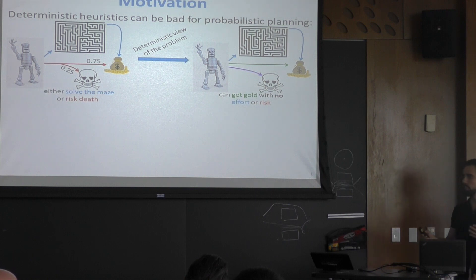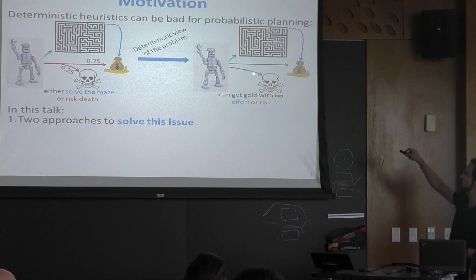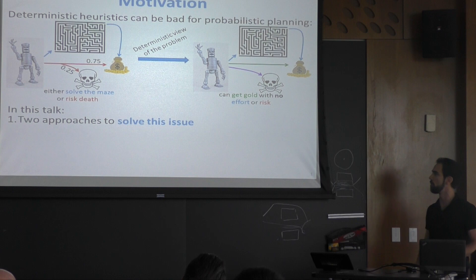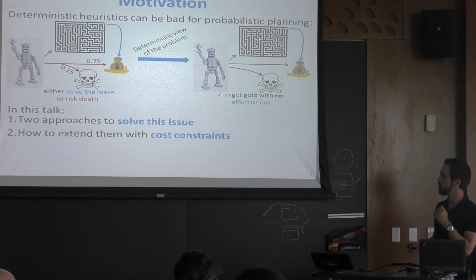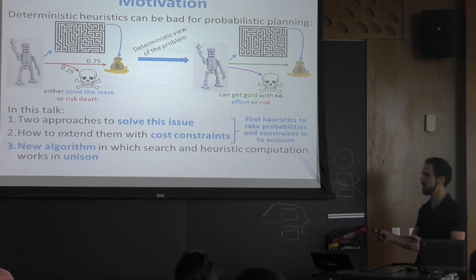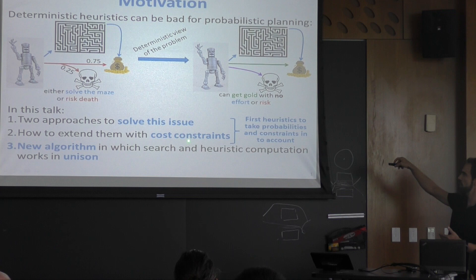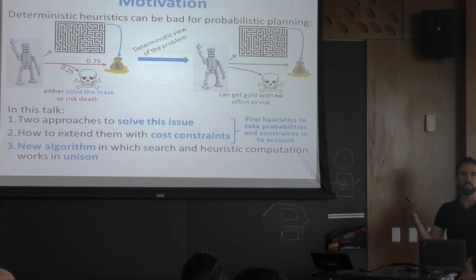This is the motivation, and in this talk I'm going to show two different ways of solving this — meaning how to compute heuristics without doing this. The heuristics will be aware that you might die if you try to go straight to the gold. Then we're going to extend that and show that these heuristics can also take care of cost constraints. And I will finish with a new algorithm where the search and the heuristic computation happen at the same time, merging all of them at once.